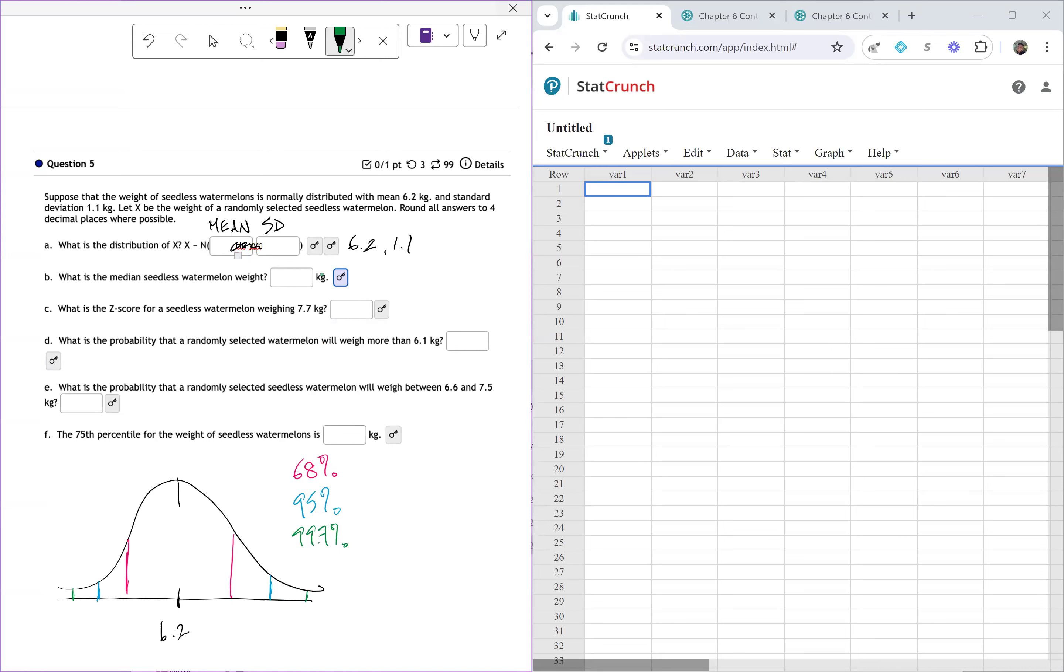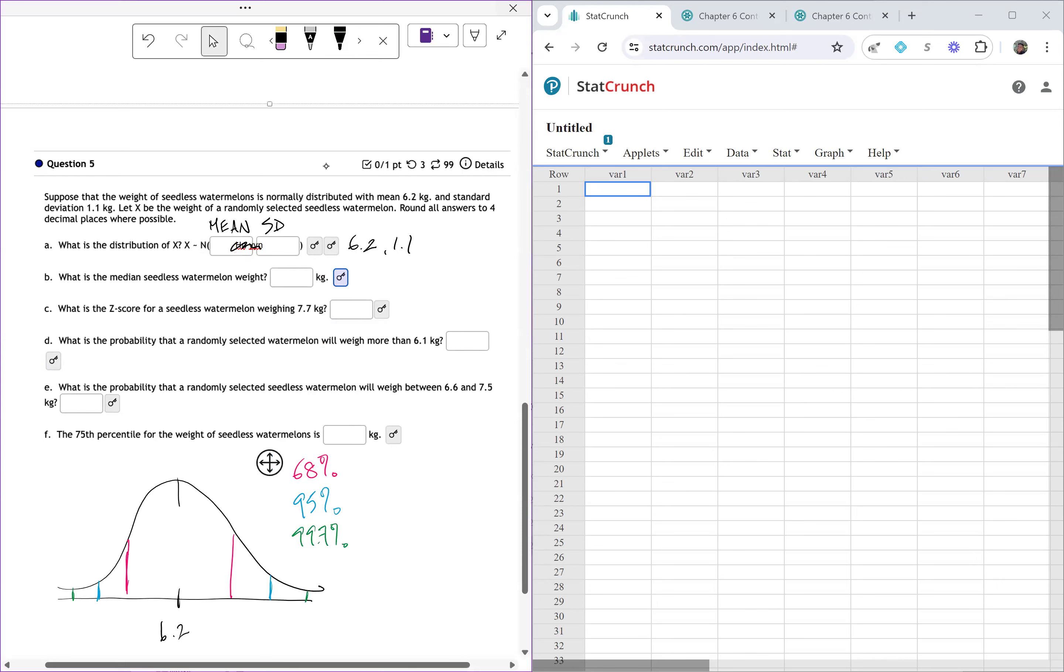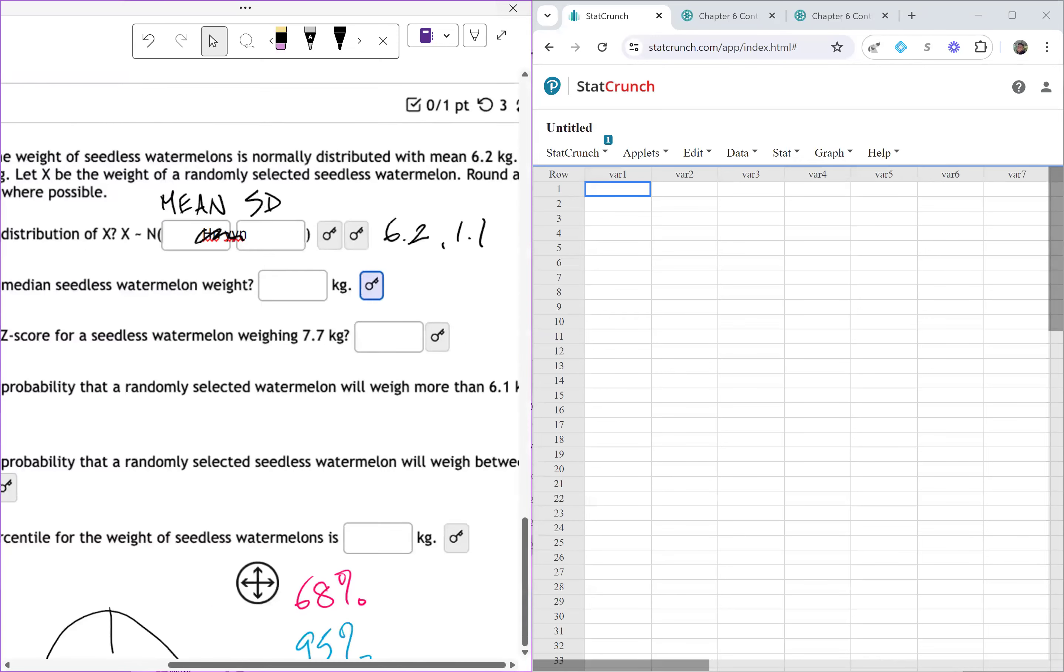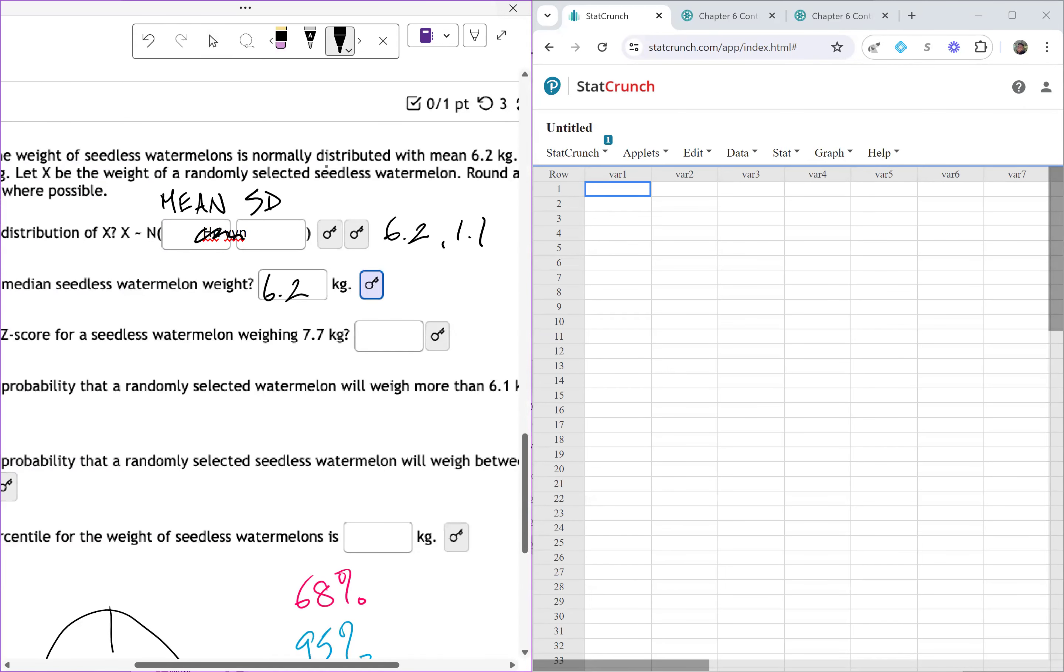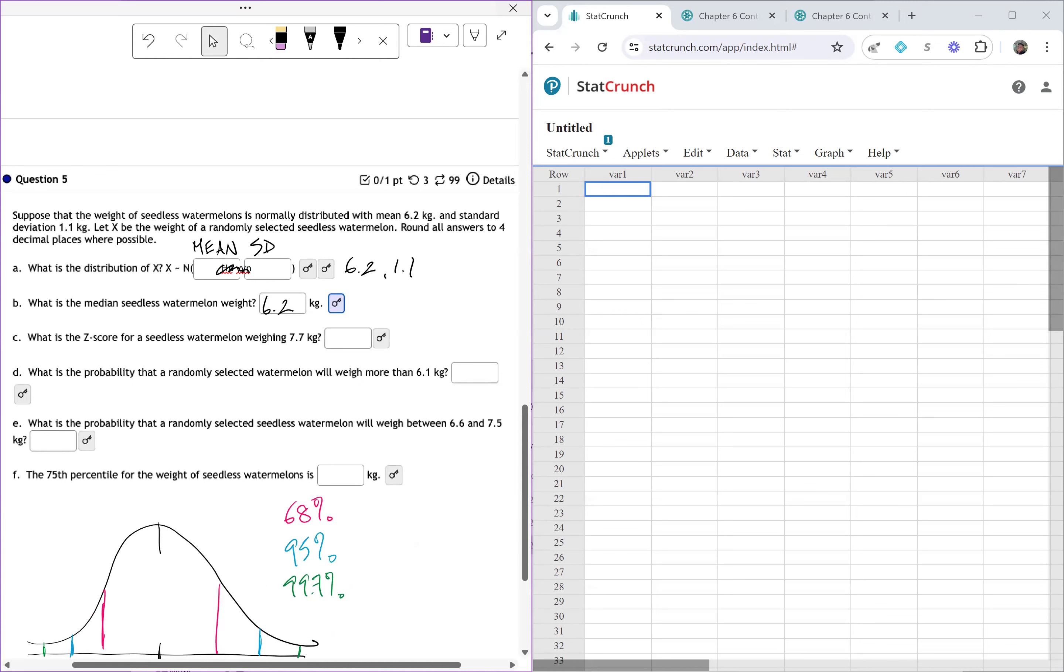Let's take a look at the question now. Part B says, what is the median seedless watermelon weight? Now in our question, we're actually given the mean. But the neat thing about a normally distributed situation is that the mean is actually the same as the median. So it is also 6.2 because in the normal distribution, the mean and the median are the same. Now that's not going to be true for every distribution we look at. So the key word here is that we have a normal distribution.